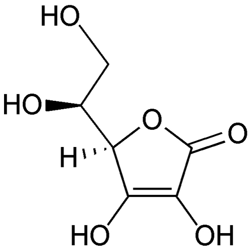These mnemonics are commonly used by students to help memorize the terminology. OIL RIG: Oxidation Is Loss of electrons, Reduction Is Gain of electrons. LEO the lion says GER: Loss of Electrons is Oxidation, Gain of Electrons is Reduction. Red Cat and An Ox: Reduction occurs at the cathode, and the anode is for oxidation.